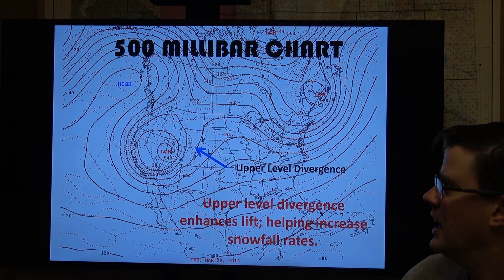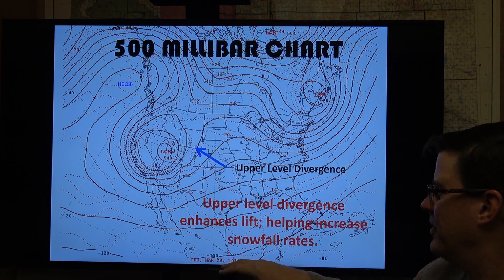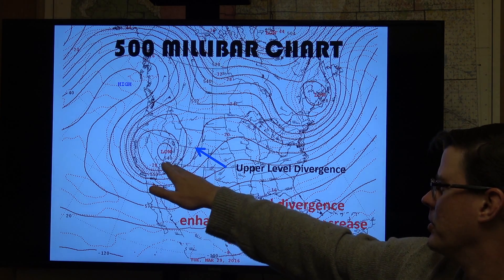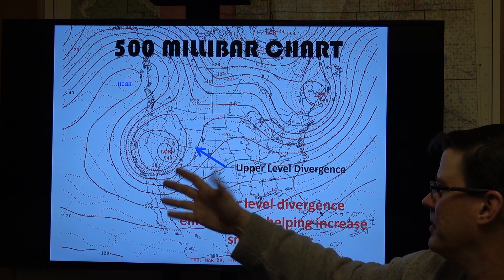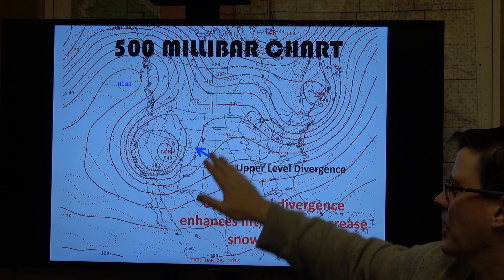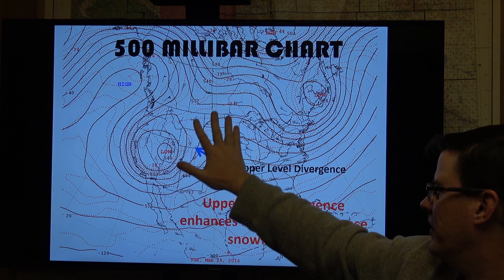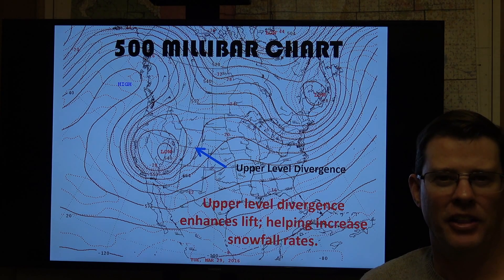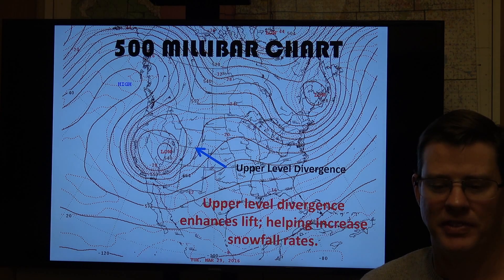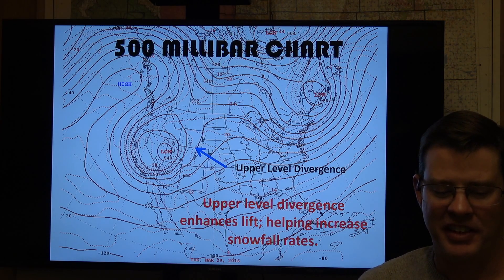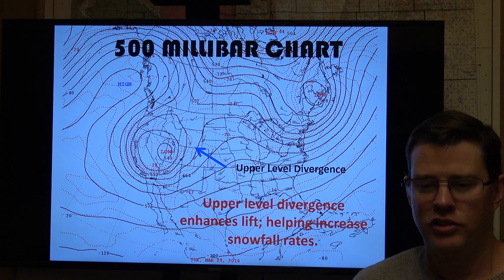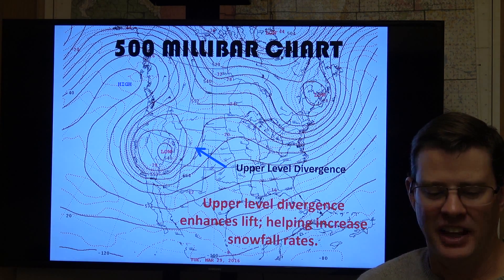Another thing we look at is what we call a 500 millibar chart. This is about 18,000 feet up, give or take about 1,000. We have an upper-level low moving through here, which helps enhance lift. But the key thing to notice is how these contour lines get a little further apart going toward Wyoming — this is what we call upper-level divergence. The atmosphere is always trying to balance itself out, so as the air diverges aloft, it converges at the surface. When the air converges at the surface, it can't go down to the ground, so it goes back up. You get lift, that's how you get clouds, and when the water condenses out of the clouds, you get rain — and in this case, snow.